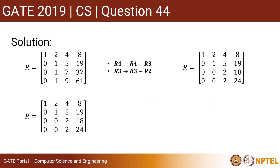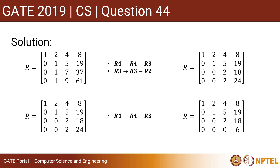This matrix now has two 2's in the next column, so we can get a 0 by subtracting row 4 from row 3. Applying row 4 = row 4 minus row 3 gives us the resulting matrix. We can easily see this is an upper triangular matrix because all elements below the principal diagonal are zero.